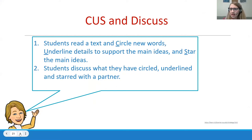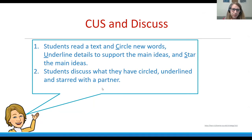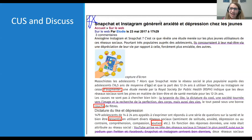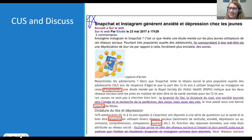Another interpretive task is called 'CUSDIS' — an annotation method. C is to circle new words; U is to underline details supporting the main idea; S is to place a star next to the main idea. For example, the main idea starred was 'Snapchat and Instagram generate anxiety and depression among young people,' with supporting details underlined and unfamiliar words circled. As a follow-up, students discuss what they circled, starred, and underlined.